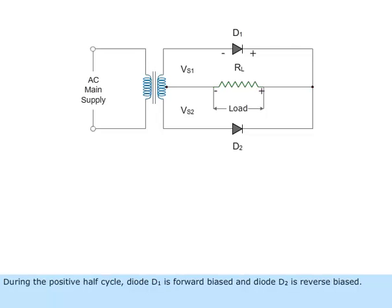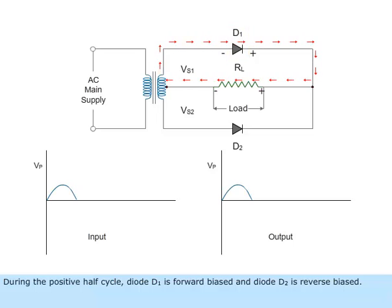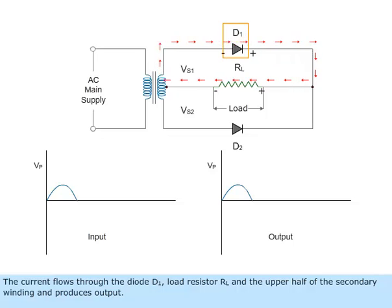During the positive half cycle, diode D1 is forward biased and diode D2 is reverse biased. The current flows through the diode D1, load resistor RL, and the upper half of the secondary winding and produces output.